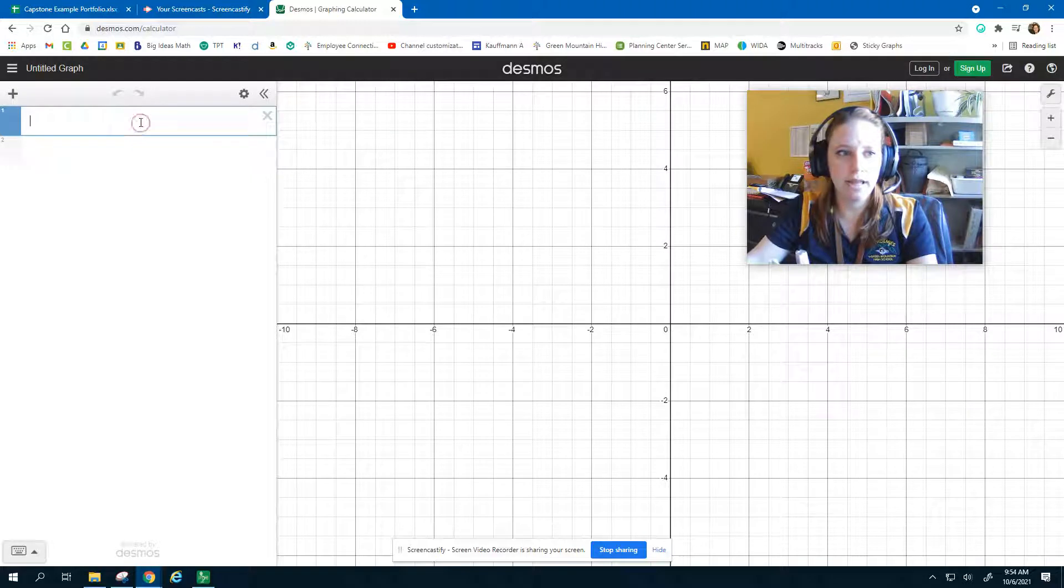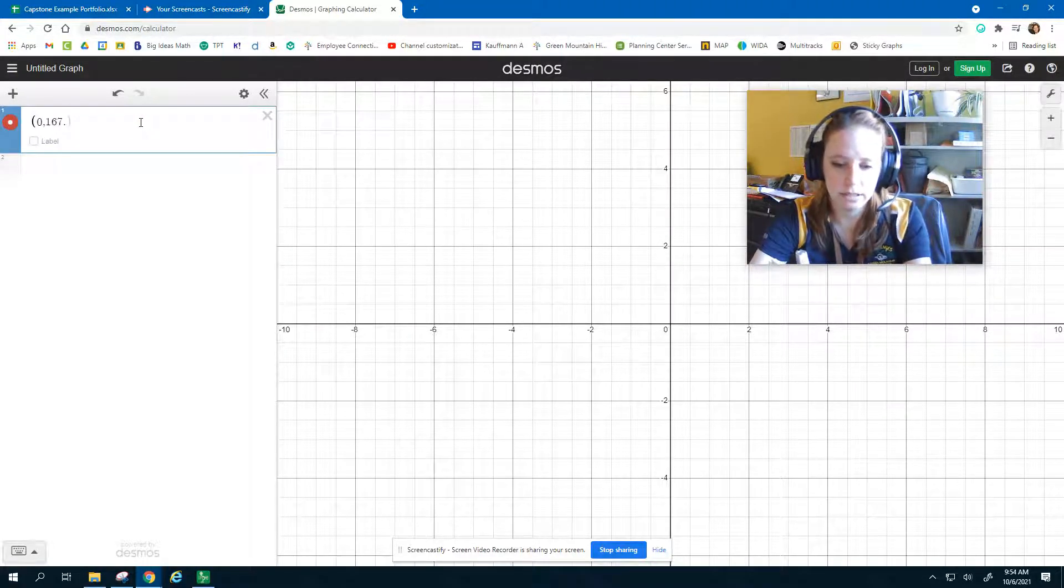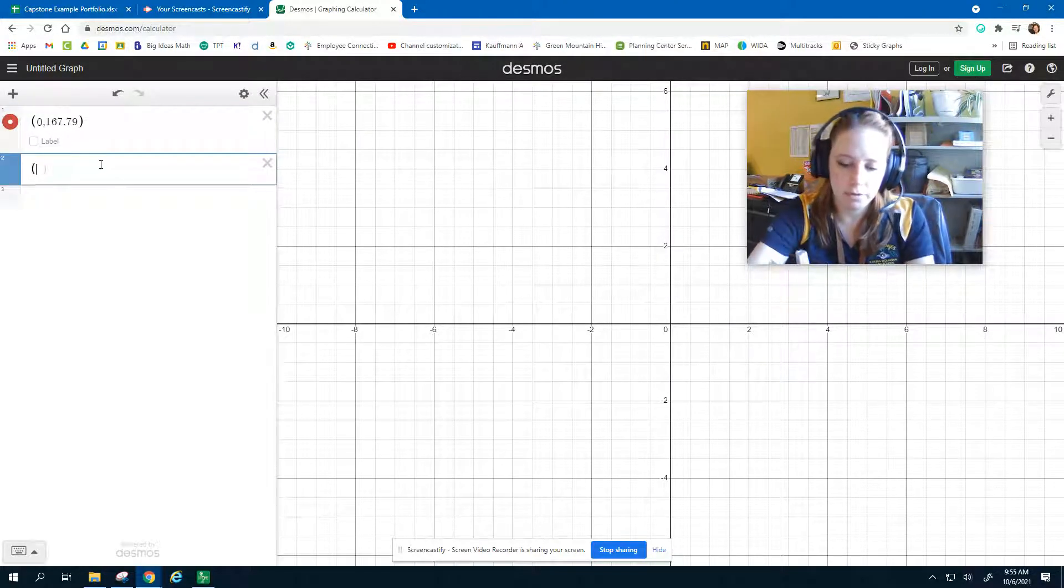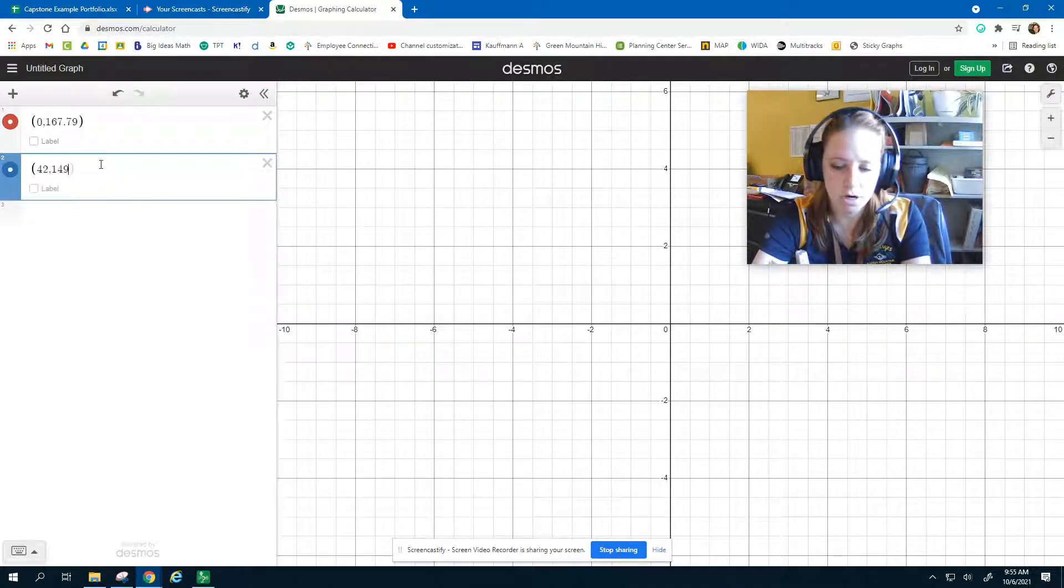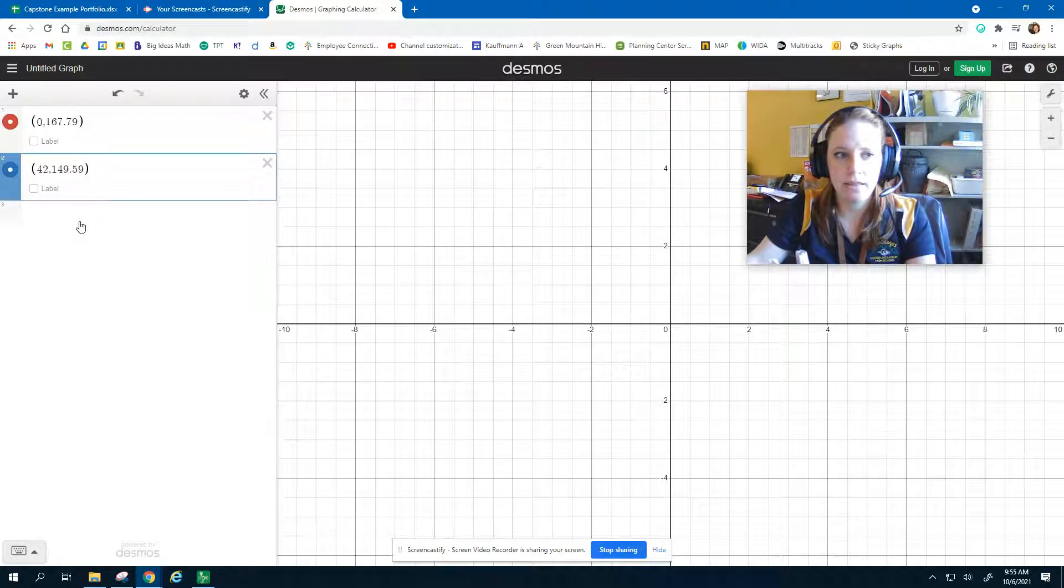Here on the left, we're going to enter in our coordinate points: 0, 167.79. Then click down below. We can put our next one in: 42, 149.59.